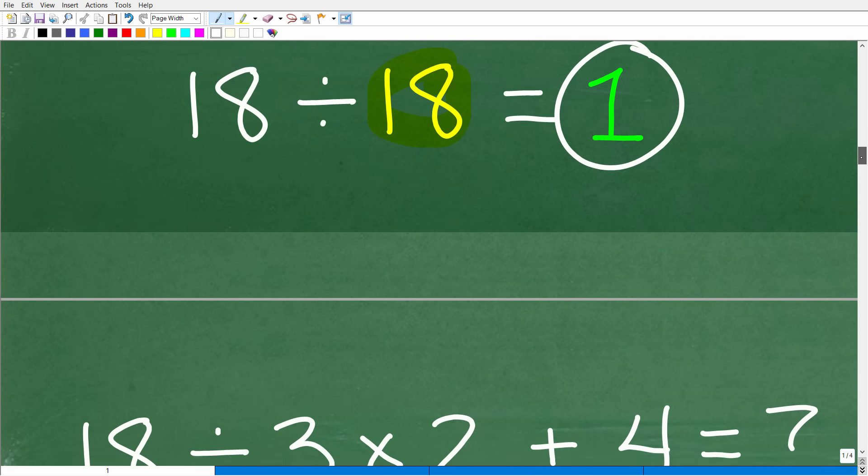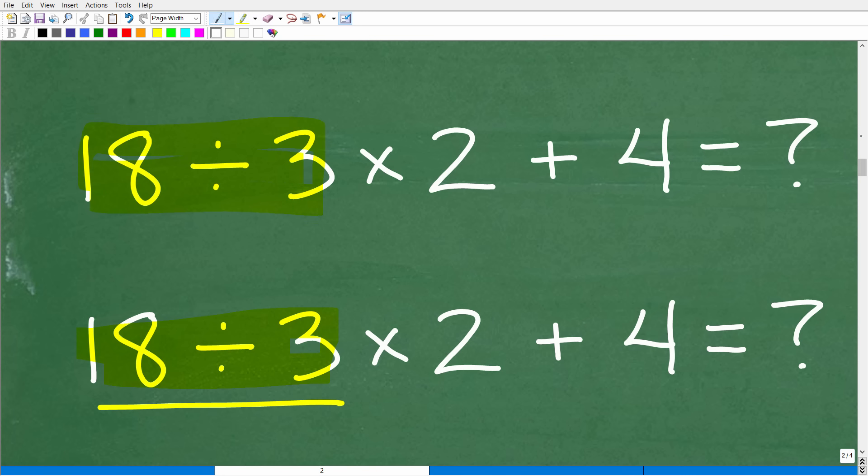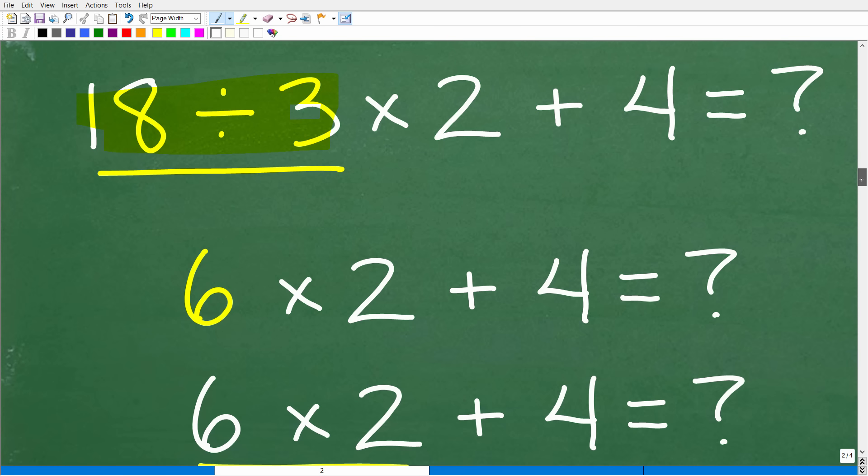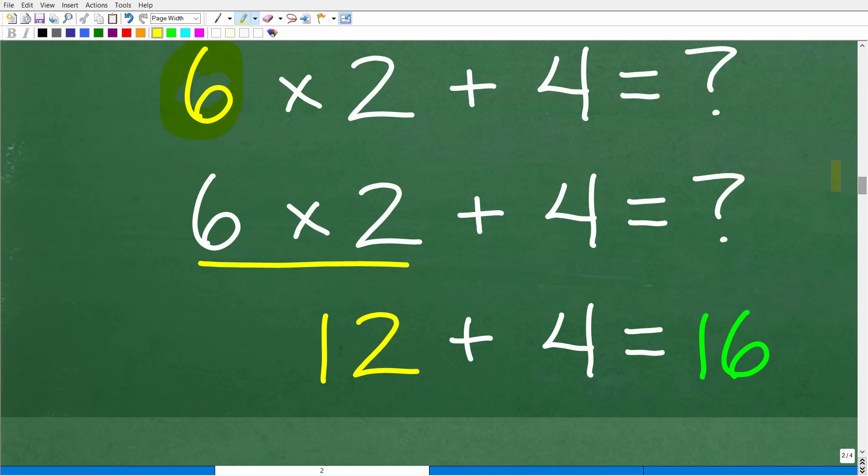So let's go ahead and take a look at the correct order. And this would be the correct order. You need to start over here. 18 divided by 3. This is where you need to start the problem. So 18 divided by 3, of course, is 6. Now we have 6 times 2 plus 4. Now the next step, the next correct step here is to do this multiplication. So 6 times 2, of course, is 12. 12 plus 4 is 16, which is the right answer. So why is this correct? Well, I'm going to explain that right now.